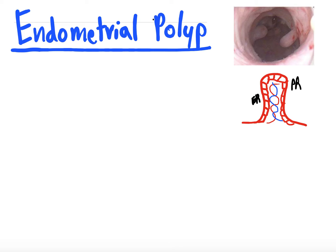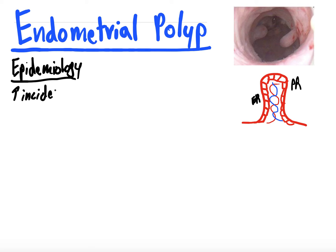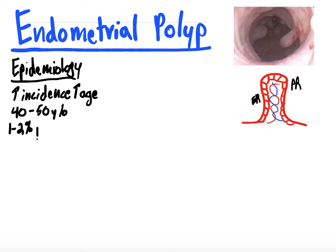So, endometrial polyps. Here I've put in a picture of what they look like on hysteroscopy. Starting with the epidemiology: endometrial polyps increase in incidence with age. The older you get, the more likely you are to have an endometrial polyp. They're most common in 40 to 50-year-old women, and they are typically benign.